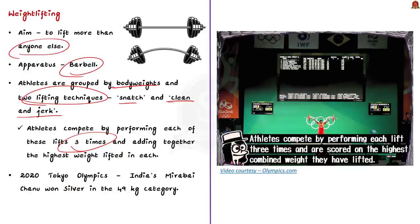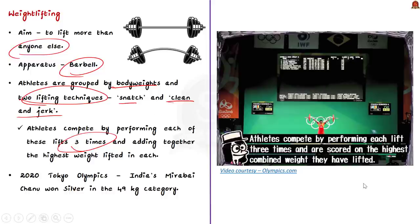Yesterday, Mirabai Chanu lifted 87 kg in the snatch and 115 kg in the clean and jerk — a total of 202 kg — and came second in the 49 kg category, earning silver. The 49 kg refers to the athlete's body weight. The first place was won by China, whose athlete lifted 212 kg in total — 10 kg more than India.